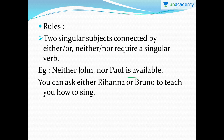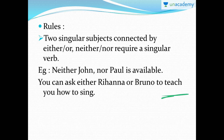Look at the next example: 'You can either ask Rihanna or Bruno to teach you how to sing.' So 'either/or' is there with Rihanna and Bruno — two singular subjects. In this example, I've also used an infinitive. You can ask either of them to teach you how to sing.